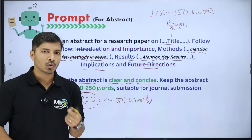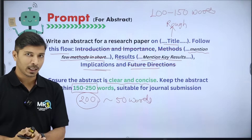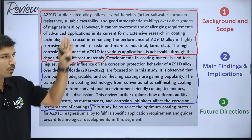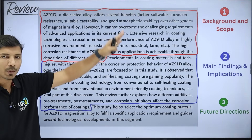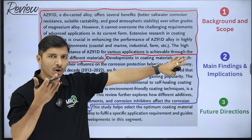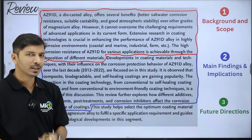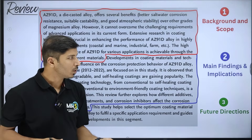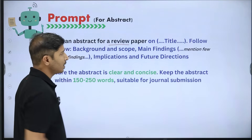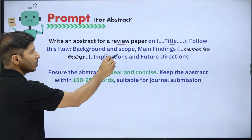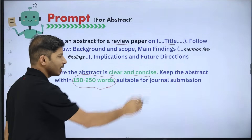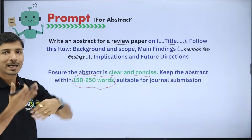The most important point is to stick to that particular journal's formatting guidelines and modify ChatGPT's prompt accordingly. The third type of abstract is related to a review paper. You can include three points: first, in one or two lines, talk about the background and scope and importance of your topic; then main findings, critical arguments, and their implications; and last, in one line, future directions. The ChatGPT prompt is almost the same, but you write 'review paper' instead of 'research paper.'